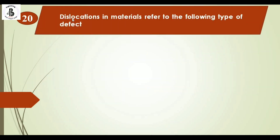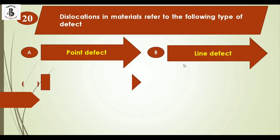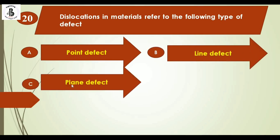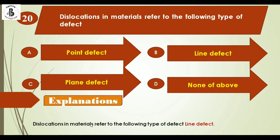Dislocations in materials refers to the following type of defect: option A point defect, option B line defect, option C plane defect, and option D none of the above. Dislocations in materials refer to a line defect. The right answer is option B, line defect.